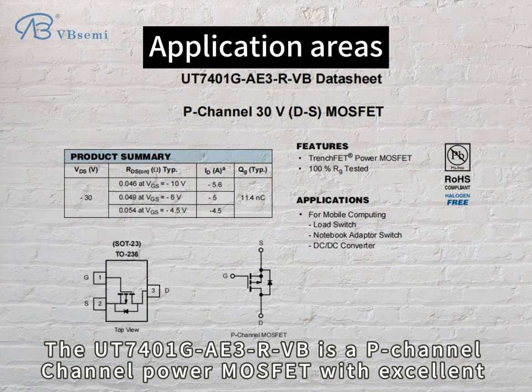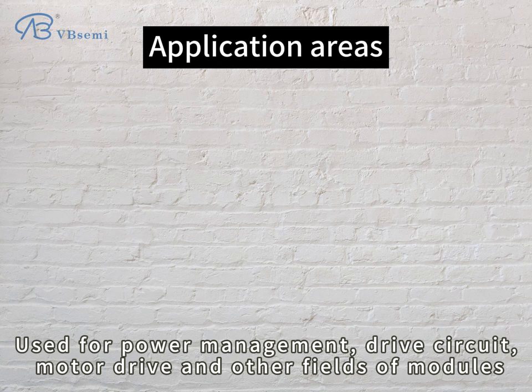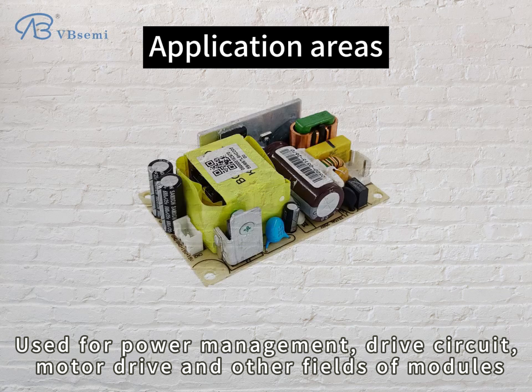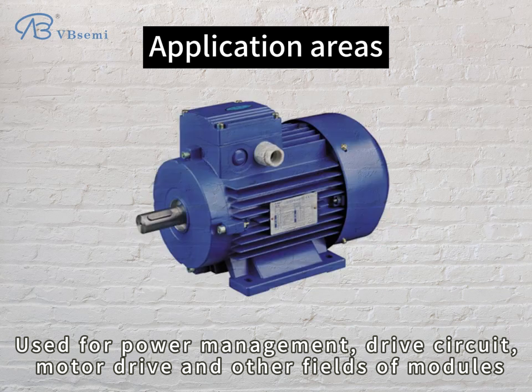The UT7401GAE3RVB is a P-Channel power MOSFET with excellent performance and versatile applications, used for power management, drive circuits, motor drive, and other fields of modules.